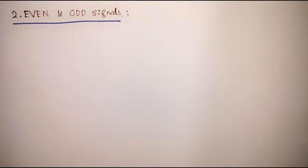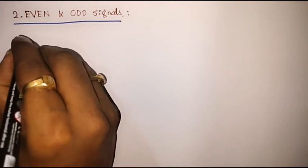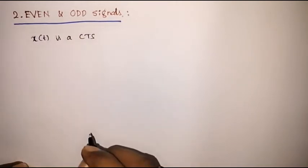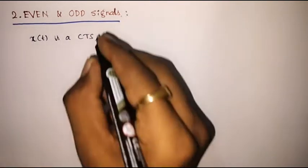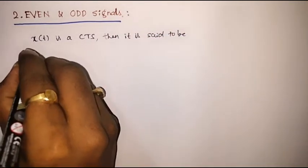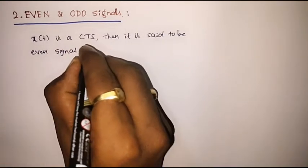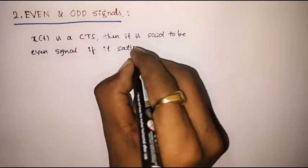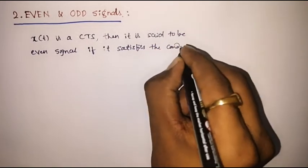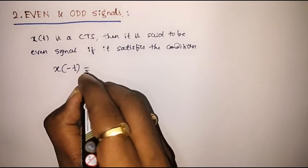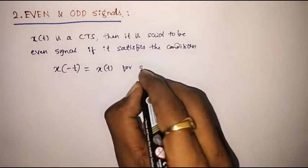In this lecture, we will study even and odd signals. Suppose x of t is a continuous time signal, then it is said to be an even signal if it satisfies the condition that x of minus t is equal to x of t for all t.